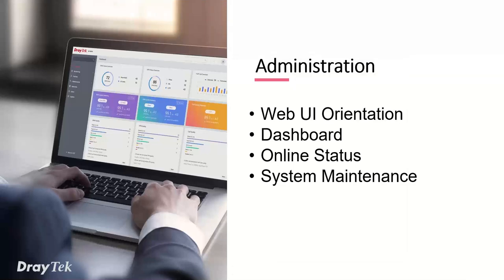Now let's look at some illustrations — starting with an orientation of the interface and how you navigate around the 3910. The 3910 is a successor to products that used a slightly different interface. If you're familiar with DrayTech, you'll know the term DrayOS — most of the 28 and 29 series routers share the same interface, and the 3910 also shares that. The older 3300V and 3900 were slightly different, but the 3910 is completely the same, so you'll be very at home if you're used to the 2860, 2862, or 2865.